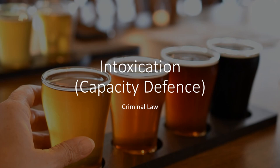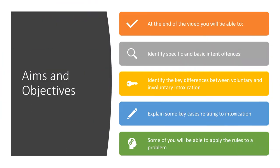Being a capacity defence, it's going to affect the ability of the defendant to think in a particular way, act in a particular way, or affect decision making. We're going to be looking at specific and basic intent offences and identify the key differences between voluntary and involuntary intoxication. We need to explain some key cases as well and be able to apply the law to problem questions.